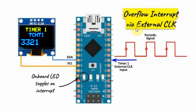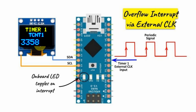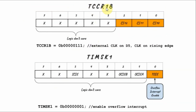In this next example, we program Timer 1 to give us an overflow interrupt through external clock. We apply a low-frequency periodic signal to pin D5 of the Arduino and observe the count-up of the internal counter. The counting starts from 0 up to 65,535. On the next count, it resets to 0 and an overflow interrupt occurs, causing the onboard LED to toggle. We program Timer 1 Control Register B by setting the clock select bits to 111 for external clock on pin D5, and we enable the overflow interrupt bit in the Timer 1 Mask Register.